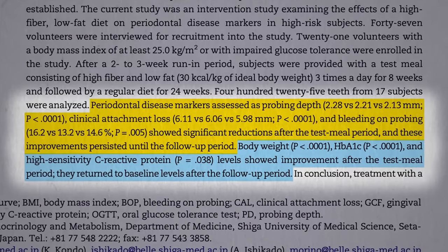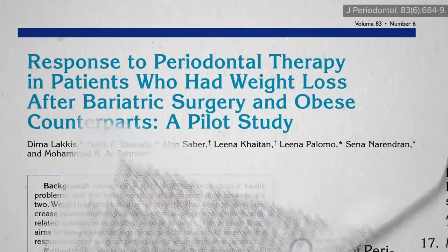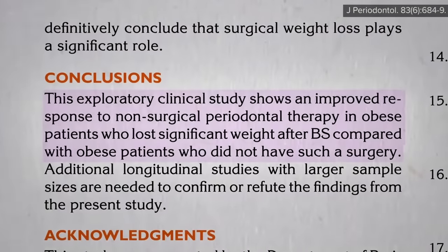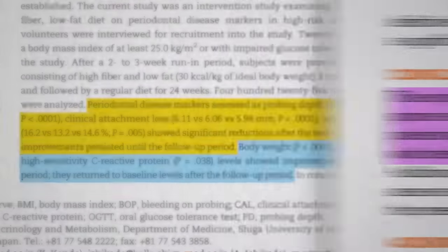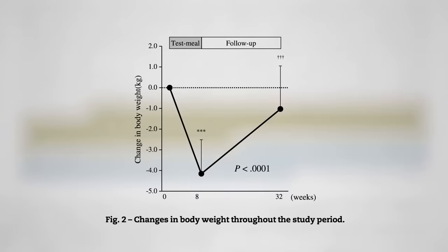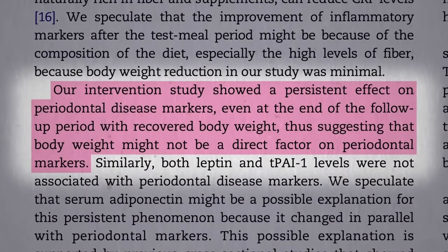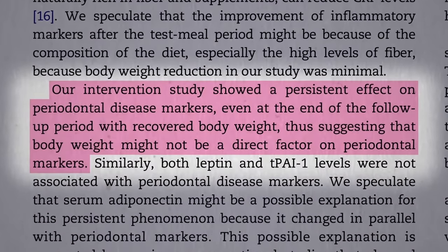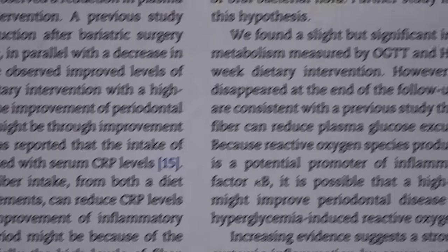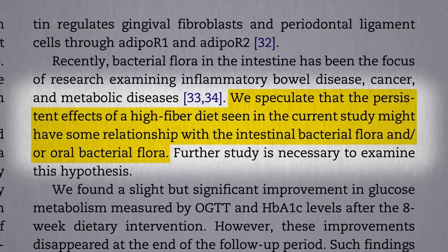Maybe their mouths got better just because they lost so much weight — you can improve periodontal disease with just bariatric surgery, like stomach stapling. Well, after eight weeks on the diet, they went back on their regular diet and gained most of the weight back. But the periodontal disease improvements persisted, suggesting it was more than just the weight loss. They're thinking maybe the high-fiber diet altered their good gut flora, or maybe their oral flora.